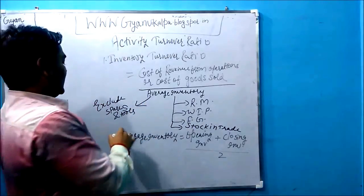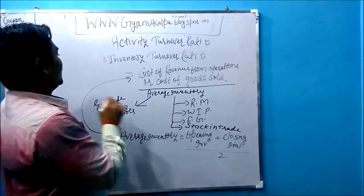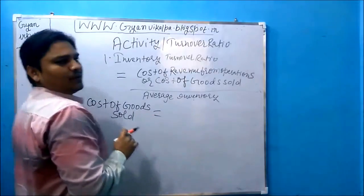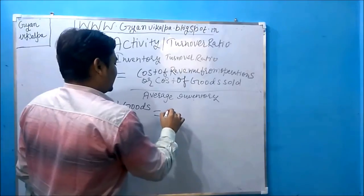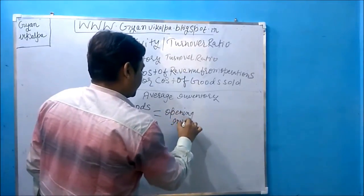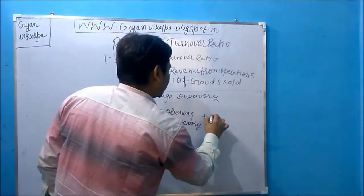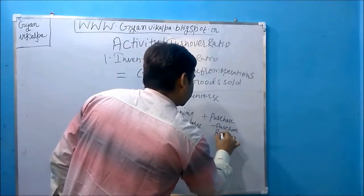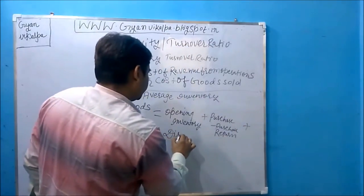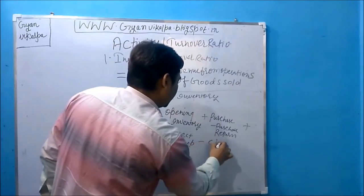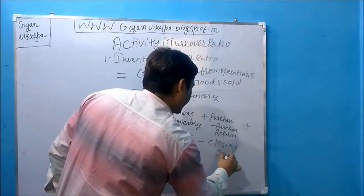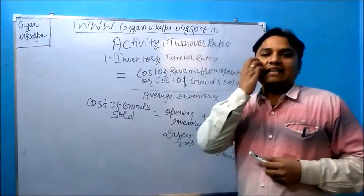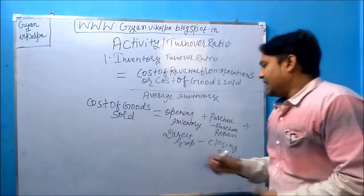Moving on to the formula for cost of revenue from operations. We will study more formulas under profitability ratio, but here the formula is: opening inventory plus net purchases (purchase minus purchase return) plus direct expenses minus closing inventory. Direct expenses refers to all kinds of expenses included on the debit side of the trading account.